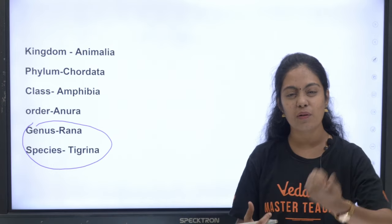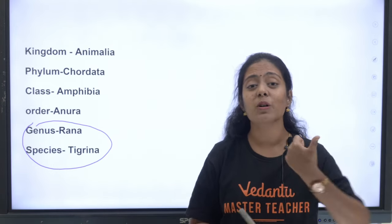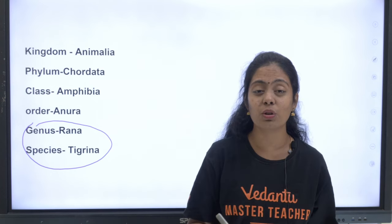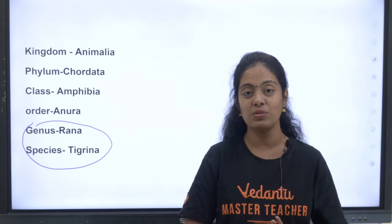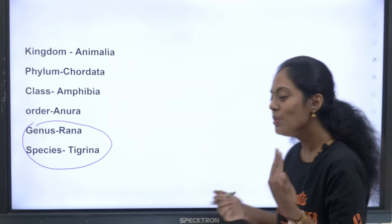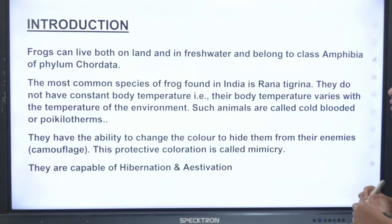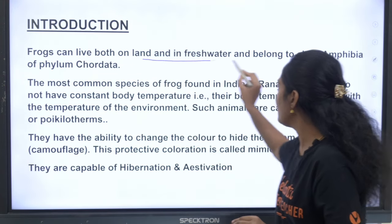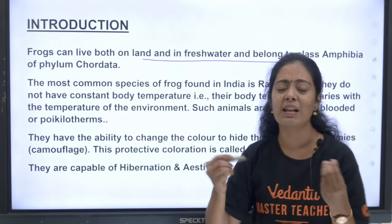Amphibians — why do we call them amphibians? Because their skin is very moist, they can live both on land and in water, and they exhibit metamorphosis. Frogs can live on land and in fresh water and belong to the class Amphibia of Phylum Chordata.